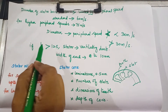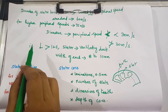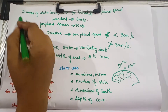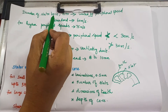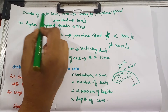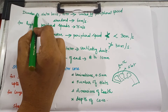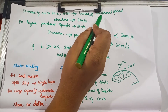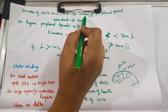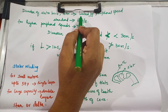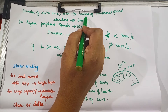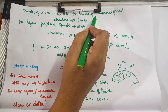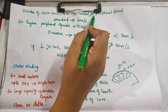Dear students, this is a continuation of the previous video. We are designing the armature. So, we want to select the diameter of the stator bore and rotor. It should be limited by peripheral speed — we cannot select random values. It has some limitation. We have to select the diameter of stator bore and rotor in such a way that the peripheral speed should be within the limit.